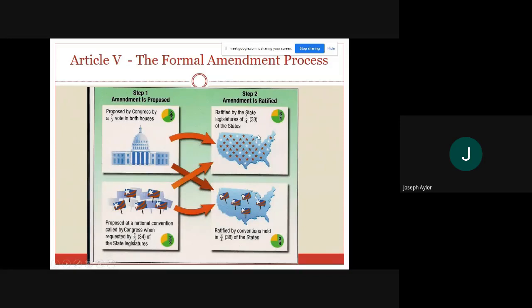AP will mark it wrong if on an essay you say an amendment passes by a majority of both houses of Congress. Make sure you know it is above a majority — two-thirds of both houses of Congress. Then it requires three-fourths of the states — right now 38 state legislatures have to approve the amendment. Both steps, upper left to upper right, have to take place for an amendment to be ratified. This puts both a federal and a state check on the amendment process.